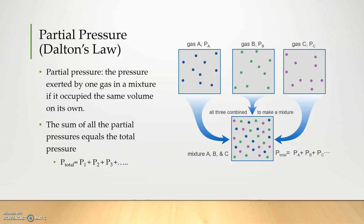Here we have a diagram showing what I'm talking about. We have gas A — these nice blue dots — and that has a pressure identified as P_a. We have gas B, these green gas molecules, with pressure P_b. We have gas C, a third different gas with these lavender particles, and that has a pressure of P_c. So if we take all three of these gases and combine them into one container to make a mixture of gas A, gas B, and gas C all in the same container, the respective pressures P_a, P_b, and P_c will add up to be the total pressure of this new container.